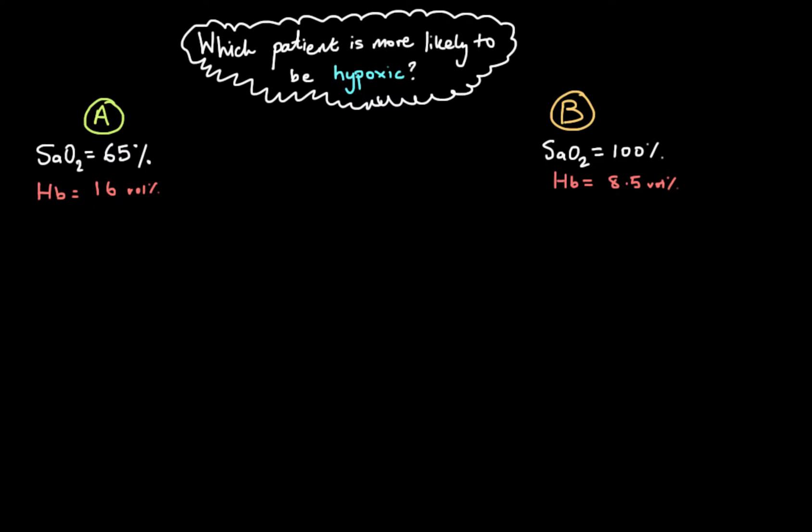So how are we going to go about doing that? Well the first way we could do it is we could look at their oxygen saturation. That seems to be the most common way that people assess someone's oxygenation status. So we could look at these patients' SATs and if we did that then we would see that patient A's SATs is 65% that's pretty low and patient B's SATs is 100% and that's as good as it can get.